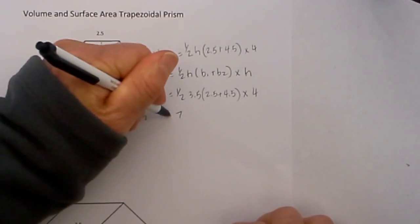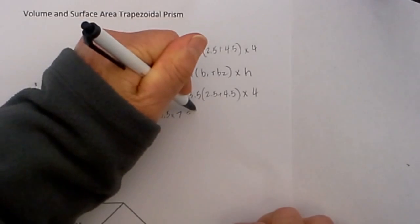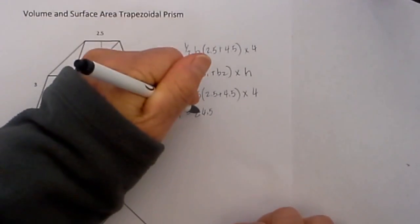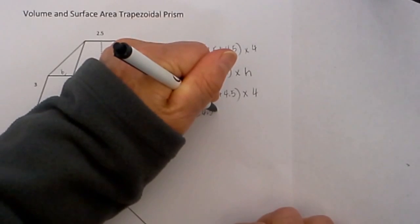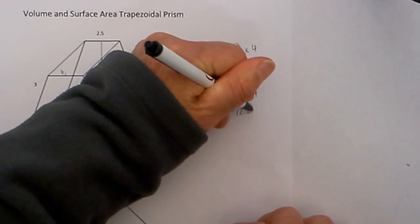3.5 times 7 equals 24.5, and 24.5 times 1/2 equals 12.25.